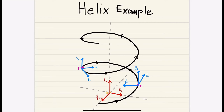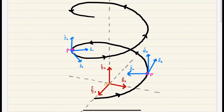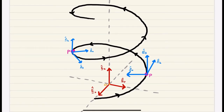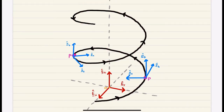We're going to do an intrinsic example using a helix. For those of you who don't know, a helix is — you can think of it as a stretched-out slinky. It's this track right here that spirals as it goes up. Our e_t, our tangent direction, is always tangent to our track, and our track is the helix.